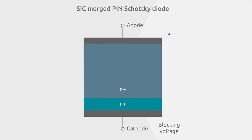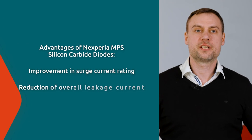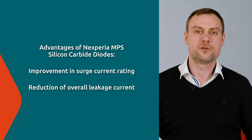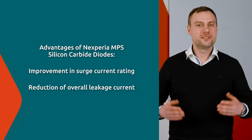Under reverse bias, the P-wells lead to a shift of the maximum field strength downwards into the almost defect-free drift layer, away from the metal barrier with its imperfections. Leveraging Nexperia MPS diodes therefore leads to a reduction of the overall leakage current.